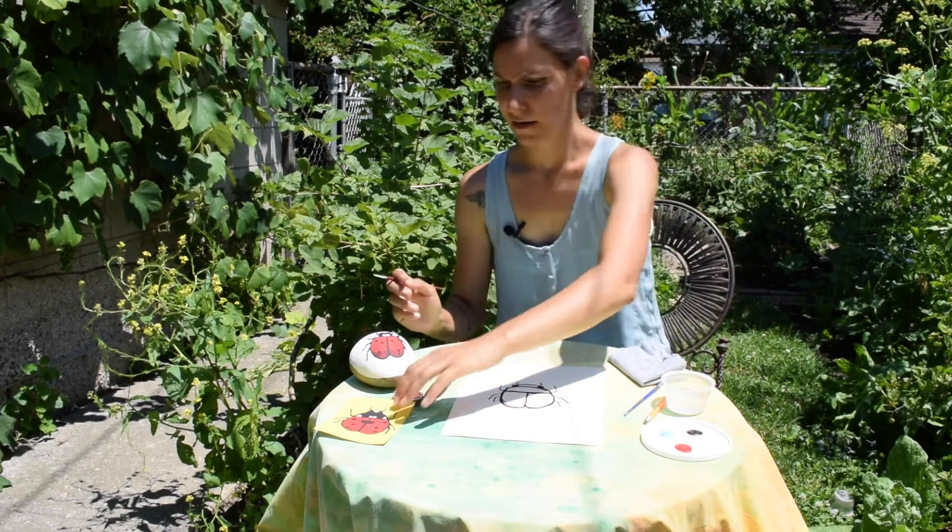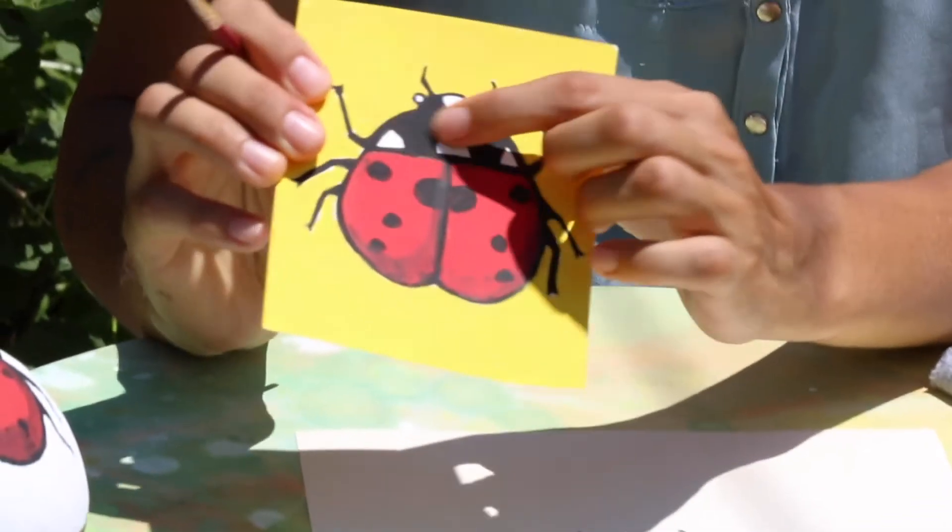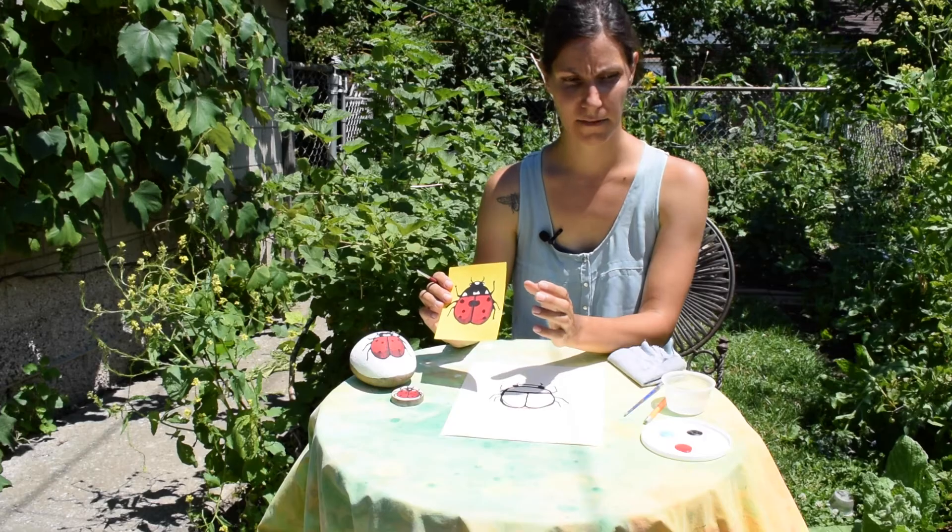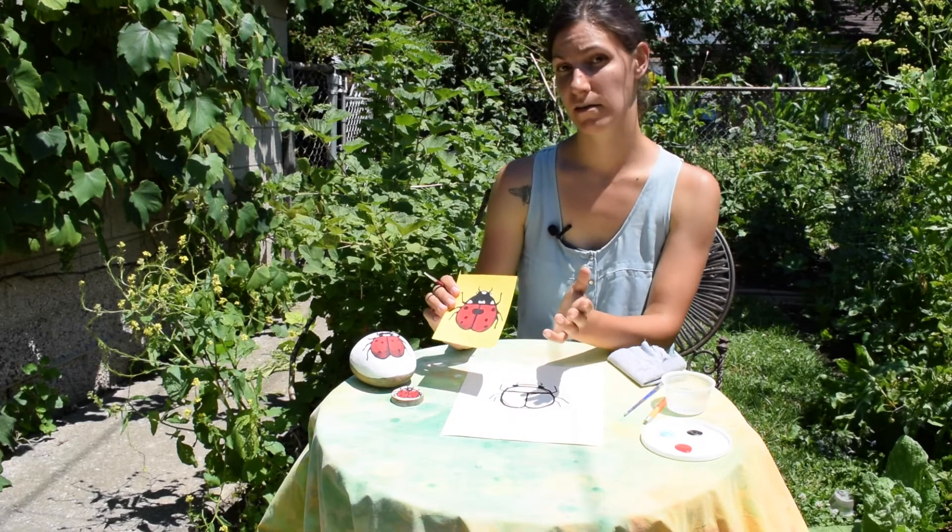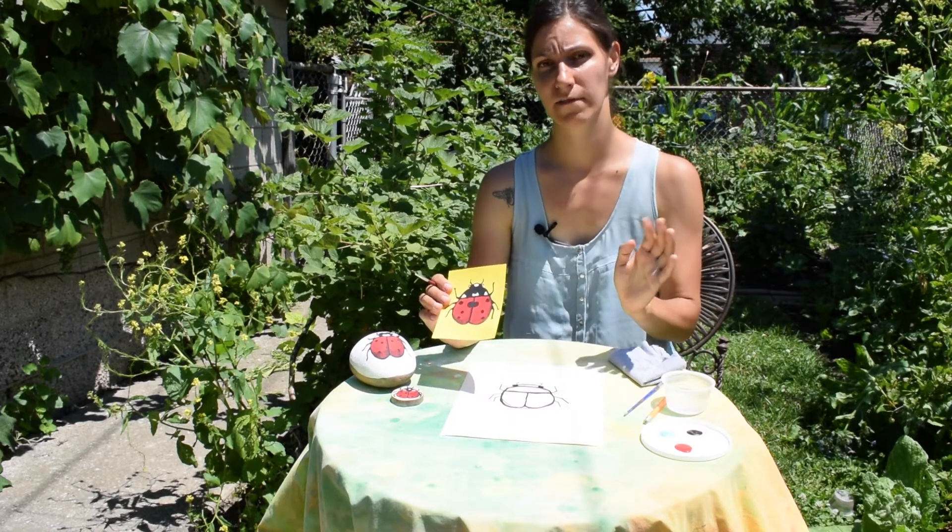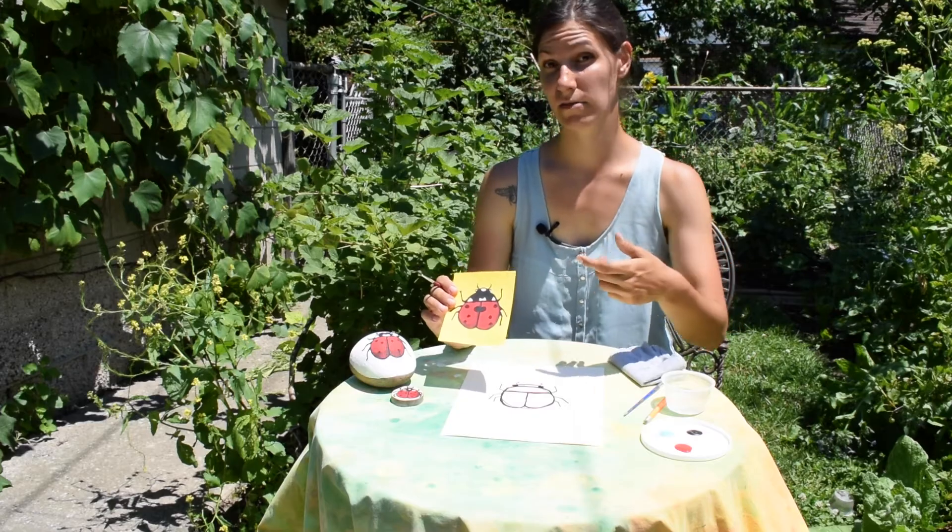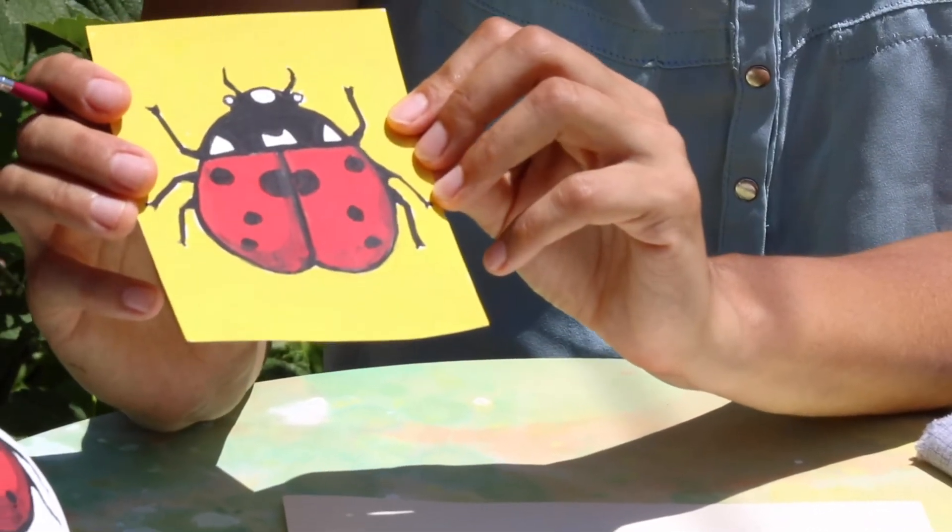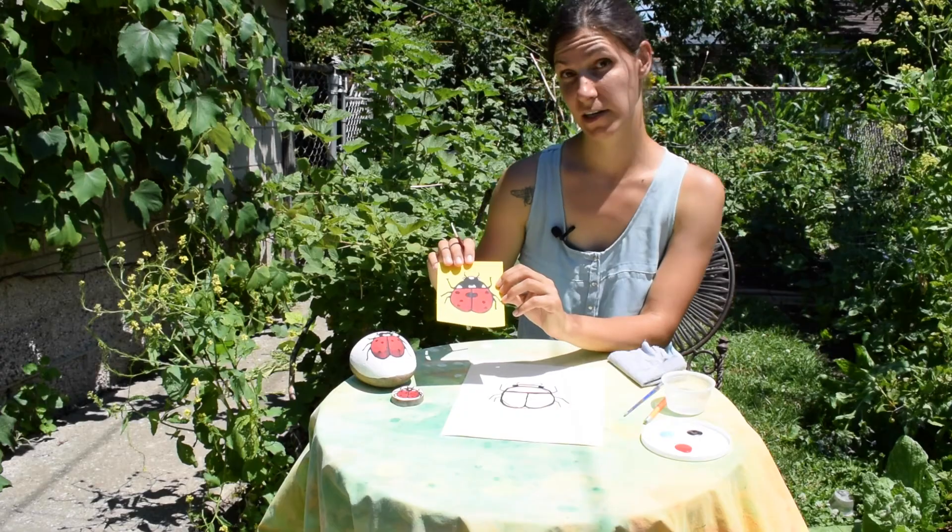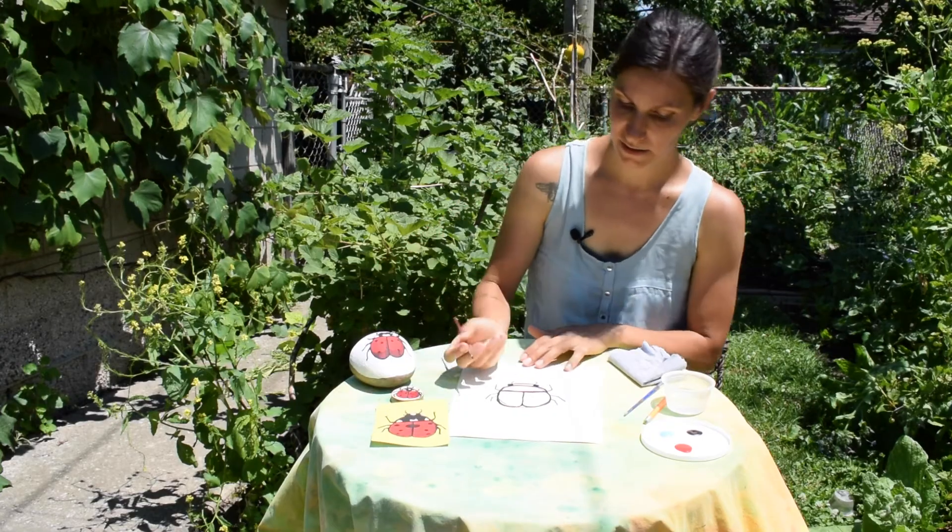And then these white spots on the ladybug's thorax and head—some ladybugs have those white spots and some don't. They're different on different species. There are so many different species of ladybugs that those white spots can be different patterns and different shapes. I'm using this as a basic pattern that I'm going to copy, but feel free to experiment and play with it a little bit.